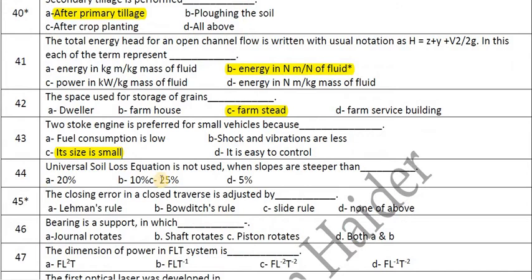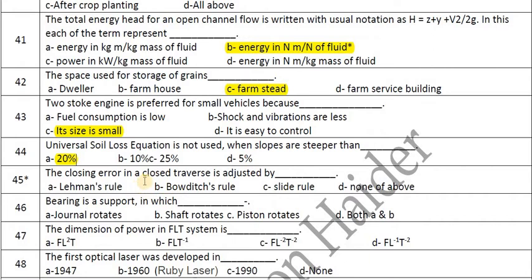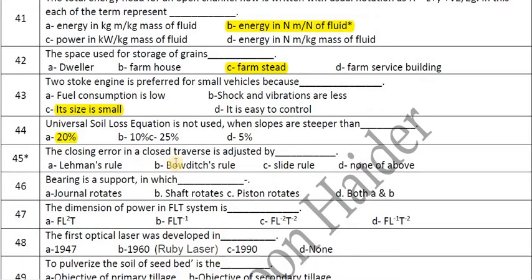The universal soil loss equation is not used when slopes are steeper than 20%. The closing error in a closed traverse is adjusted by Bowditch's rule.